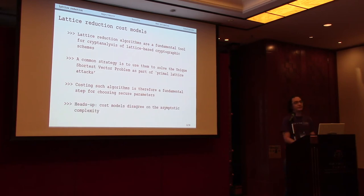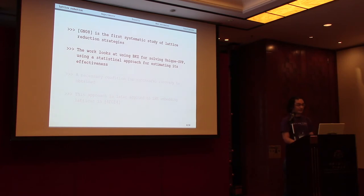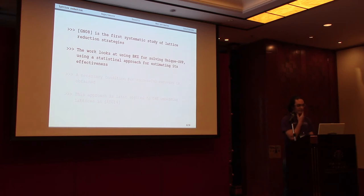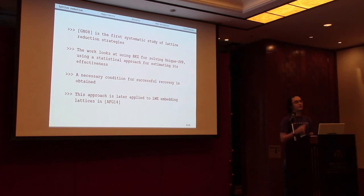The existing cost models in the literature disagree on the asymptotic costs for lattice reduction. The first systematic analysis of the efficiency of lattice reduction for cryptanalysis goes back to 2008 by Cam and Nguyen. They look at BKZ and in particular at the unique shortest vector problem. They look at it experimentally and use statistical analysis of their results to extract some asymptotics — specifically a necessary condition for being able to recover the unique shortest vector, which they call the secret, and thereby break the scheme. Albrecht et al. in 2014 then adapted this technique for cryptanalysis of LWE-based schemes.